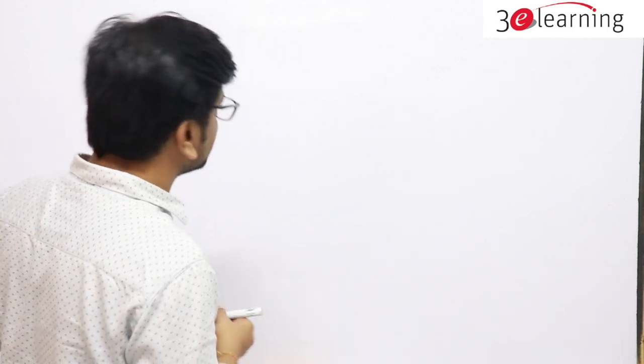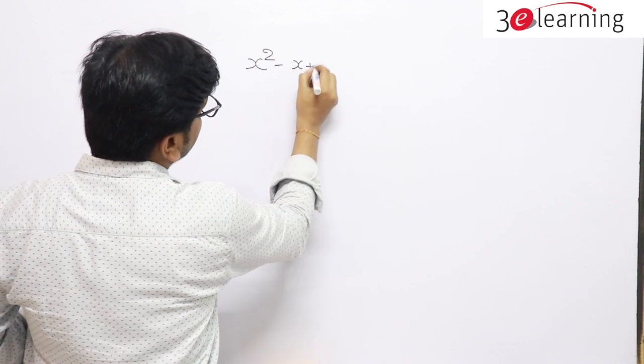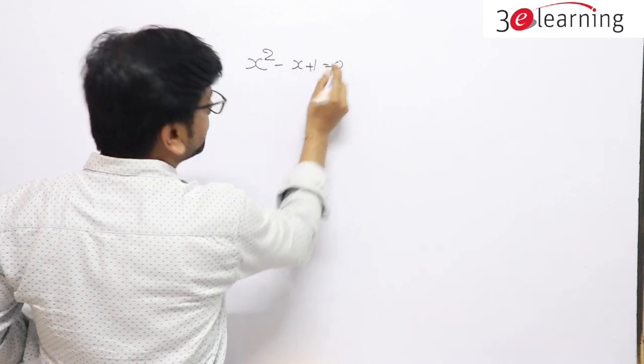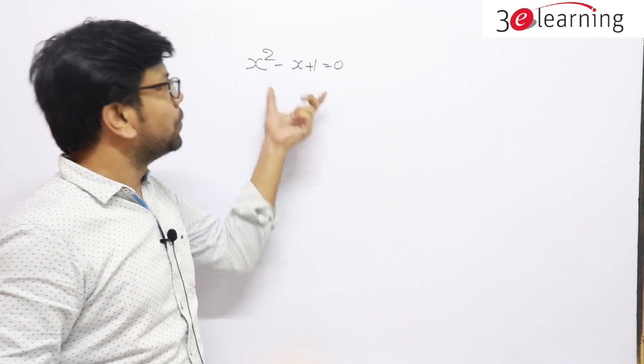This one is called a conditional algebra. Conditional algebra means you have conditions and different outputs. If you remember the outputs, then you can solve the questions easily. If you don't remember, then you have to go with the basic approach — there is no problem with that. This is one of the most important conditional algebra equations: x² - x + 1 = 0.